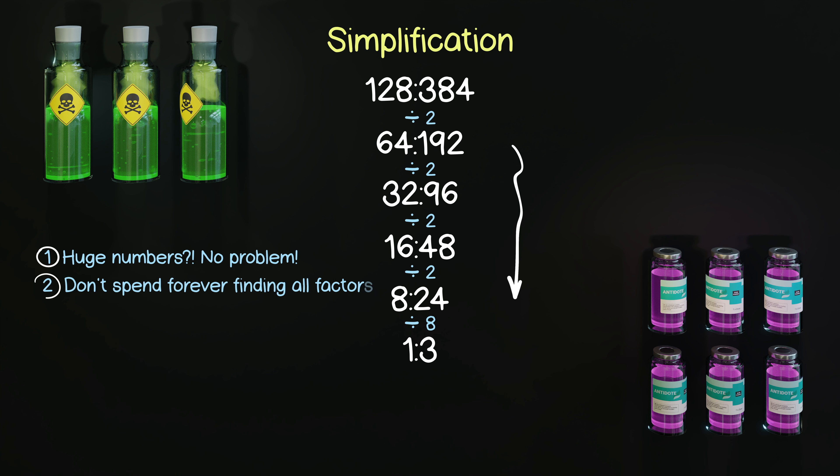But if you can't, don't spend ages trying to find all of the factors of each number. The third reason is to show you that you always need to double check that you've simplified far enough. And the final and fourth reason is this is why we simplify in the first place. One to three is a much nicer ratio to understand and work with than 128 to 384.